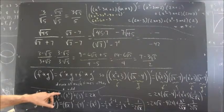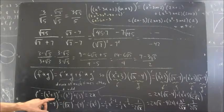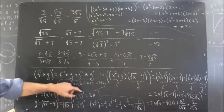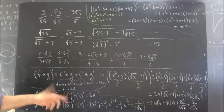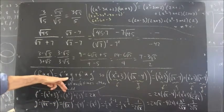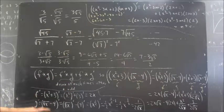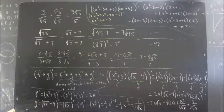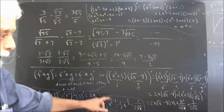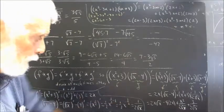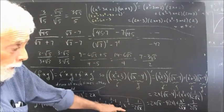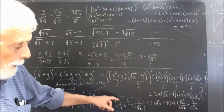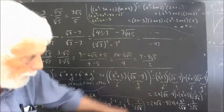f prime is the quantity x squared plus 3, prime, so it would be x squared prime plus 3 prime. The derivative of 3 — the rate of change of a constant — is 0, and x squared prime gives us 2x. For g prime, the 4 prime is going to be 0, but we have the square root of x prime. That's x to the 1/2 prime, which is 1/2 x to the 1/2 minus 1, which is 1/2 x to the negative 1/2. Now x to the negative 1/2 is 1 over x to the 1/2, which is 1 over the square root of x. When we multiply 1/2 by 1 over the square root of x, we get 1 over 2 square root of x.